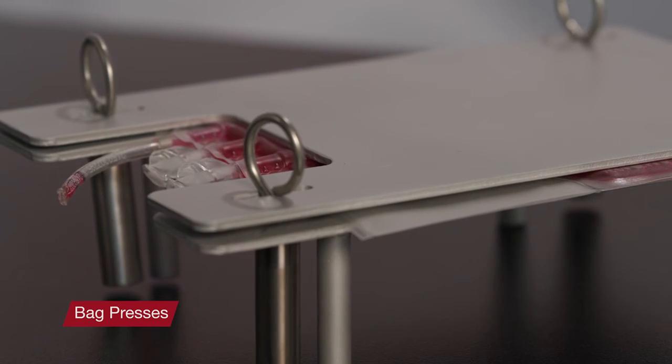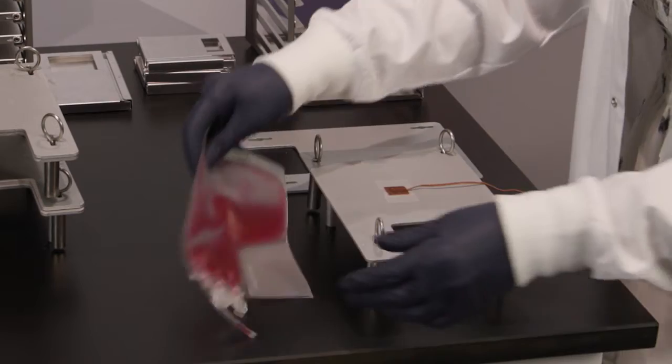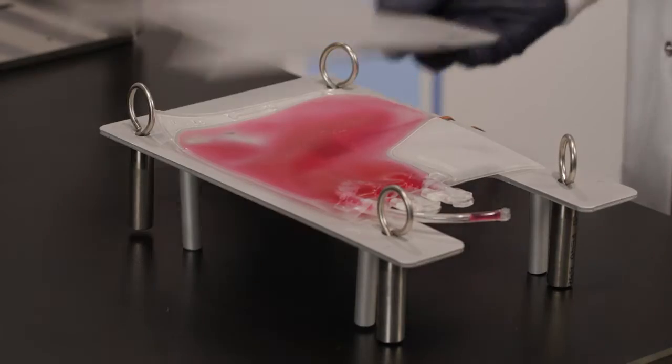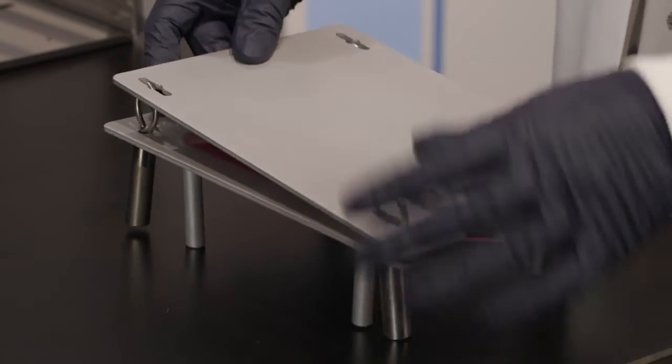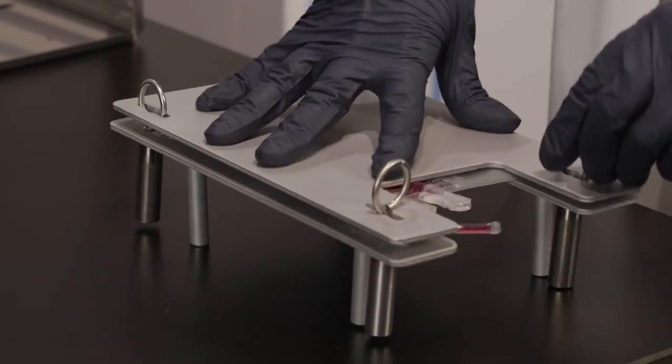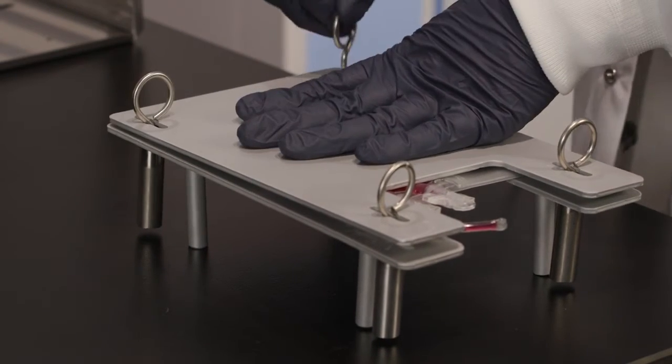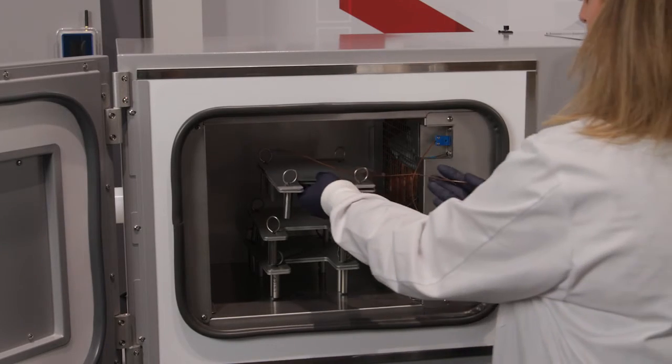Bag presses are also available for use with your controlled rate freezer. To use the bag press, simply remove the top plate of the bag press, place your bag inside the press, reattach and secure the top plate. The bag presses can be stacked inside your Cryomed unit.